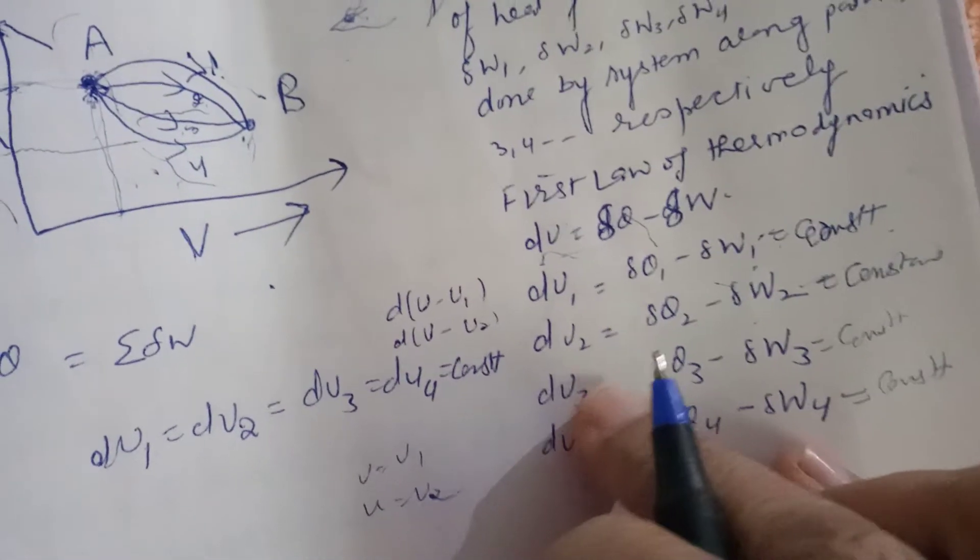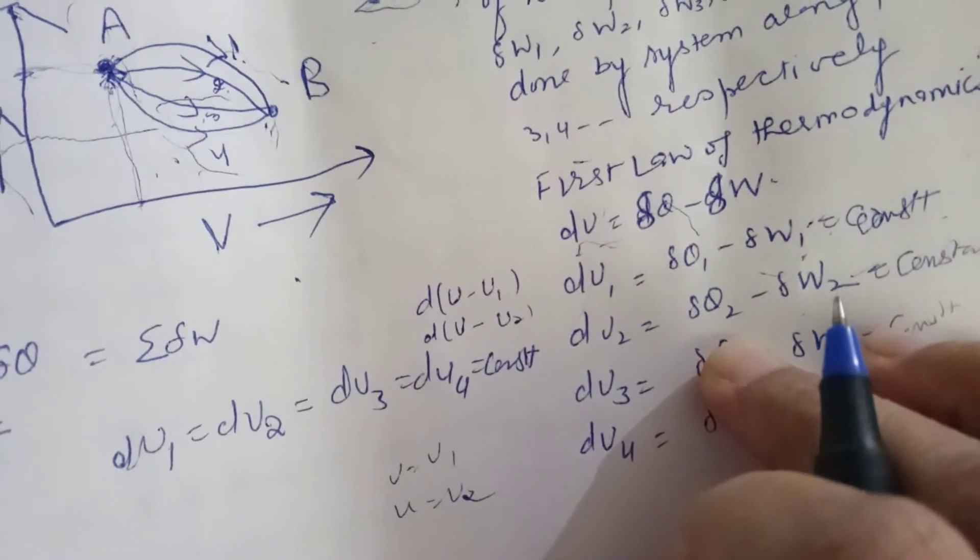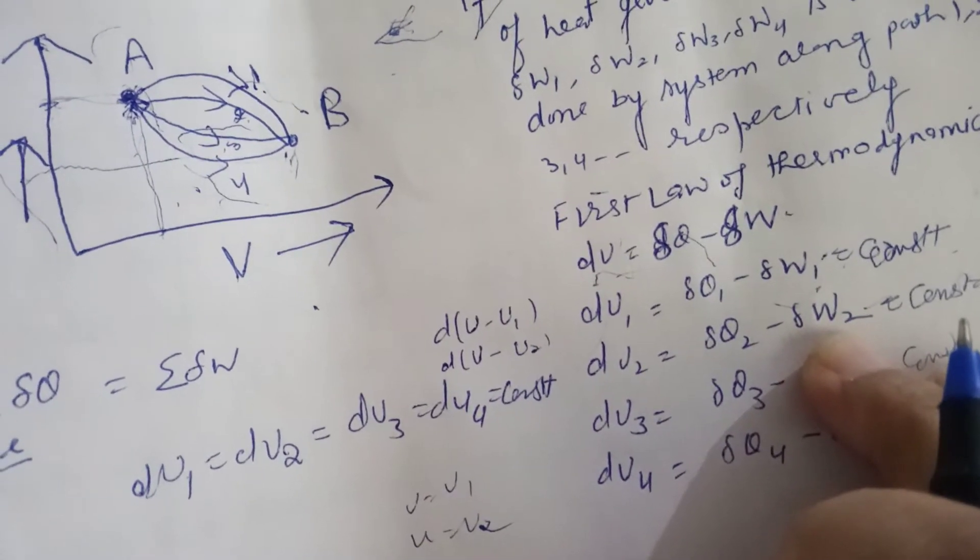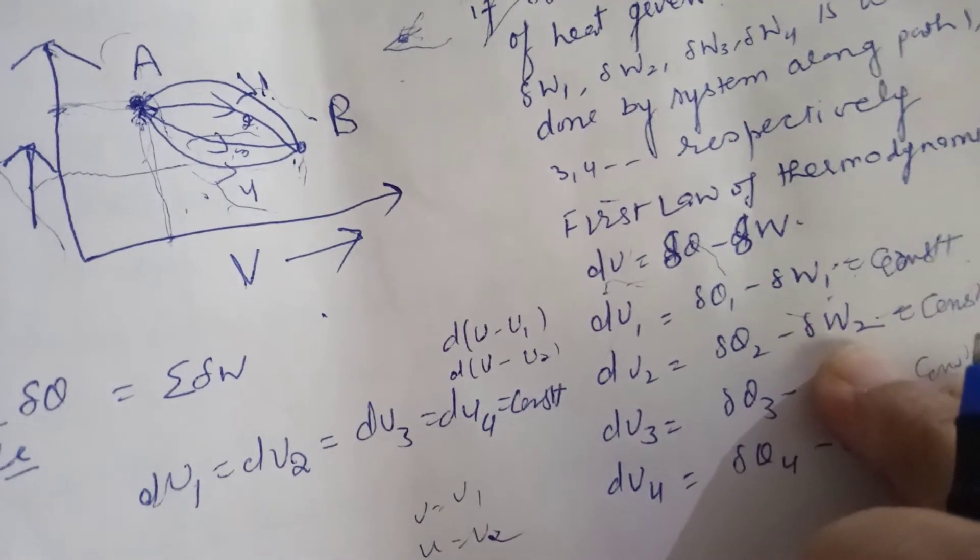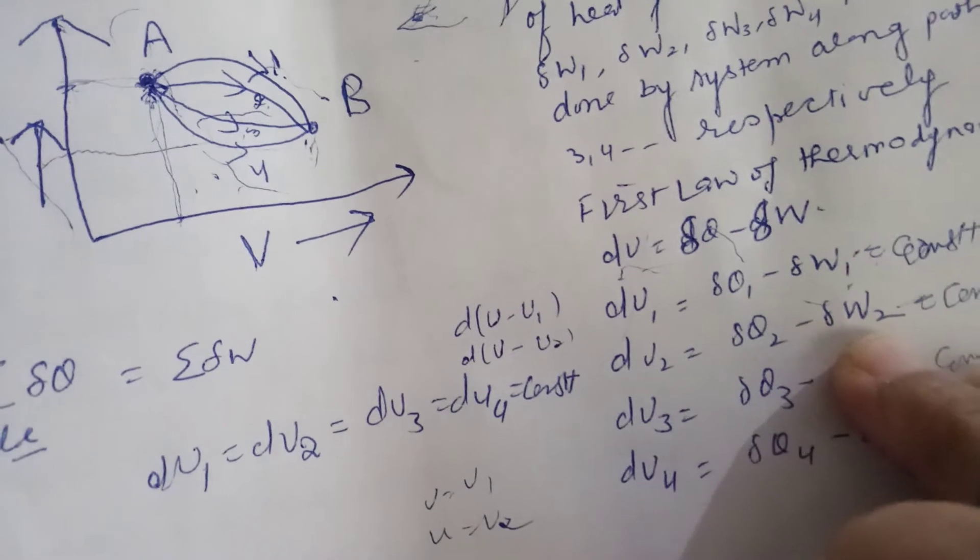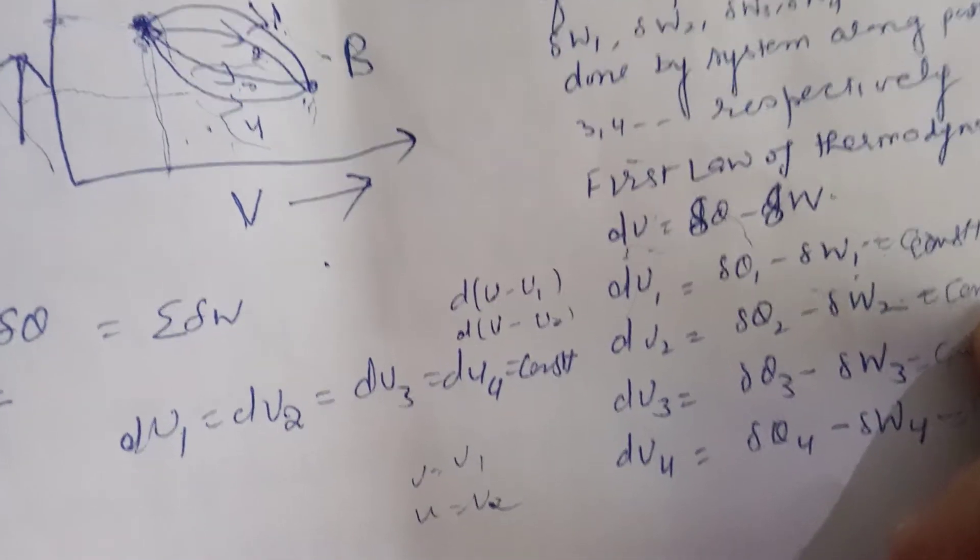If it follows path 2, and via path 2, if DQ2 heat is given to the system and DW2 is the work done from A to B, then we find del Q2 minus del W2 is a constant.